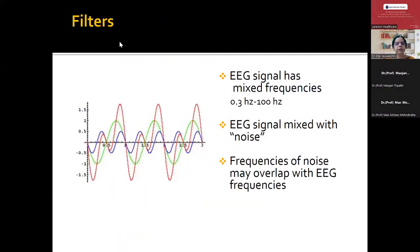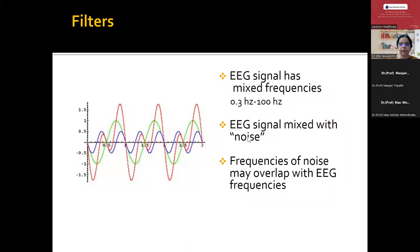Then we come to the filters. Why do you have filters in the EEG machine? When recording the EEG signal, it is a mixture of so many frequencies — not only from the brain, but a lot of noise from around: biological noise from the patient's body or from surrounding machines. The frequencies of the noise may overlap with EEG frequencies. Hence, the filters help us identify the true signal. The EEG signal is below 70 hertz and above 1 hertz. The high frequency filter is also known as the low-pass filter, and the low frequency filter is known as the high-pass filter. In addition, we use the notch filter.